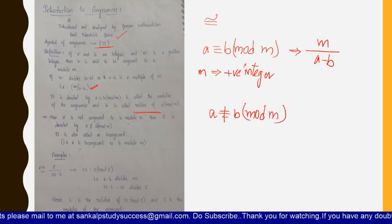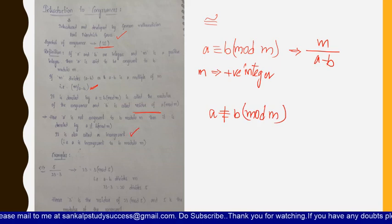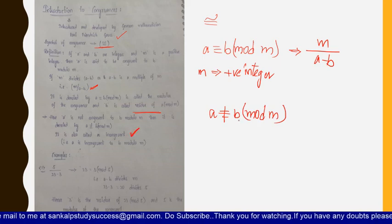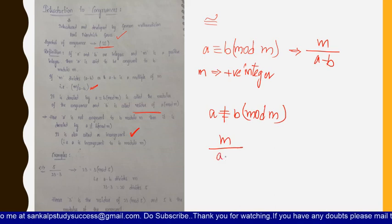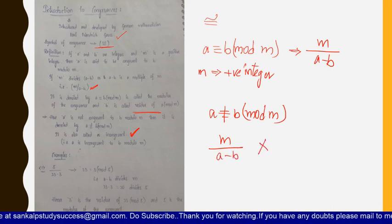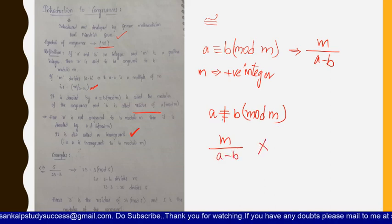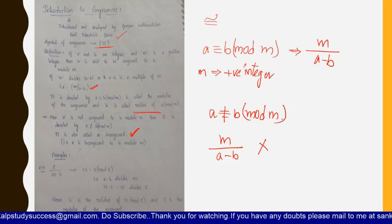If a is not congruent to b modulo m, we say it is incongruent. Incongruent means m is not dividing a minus b — if m does not divide a minus b, then a is not congruent to b modulo m.